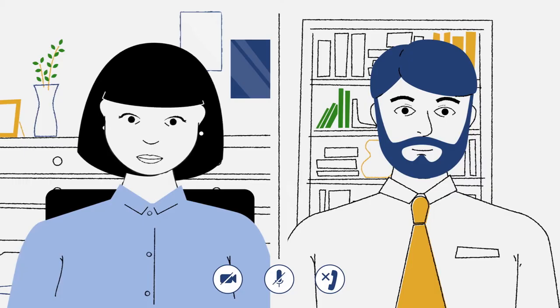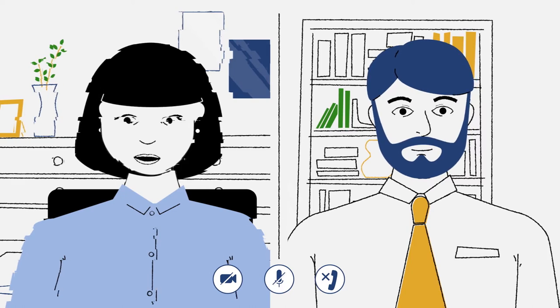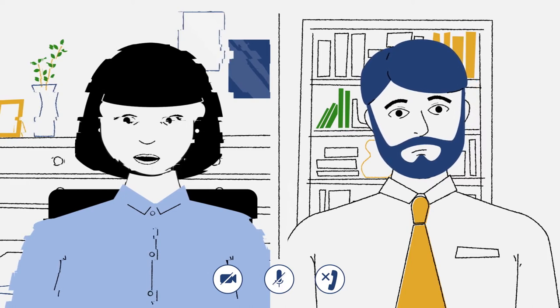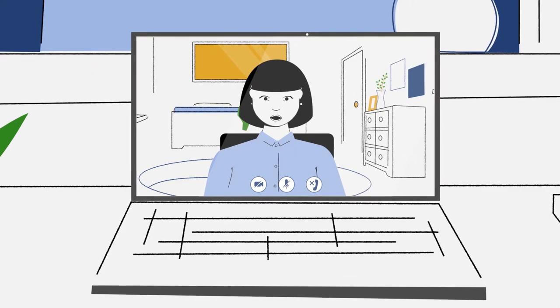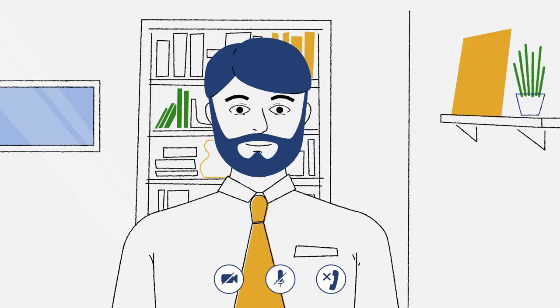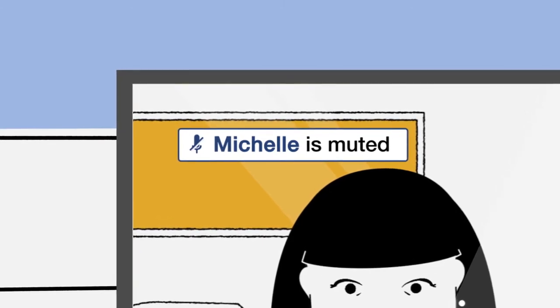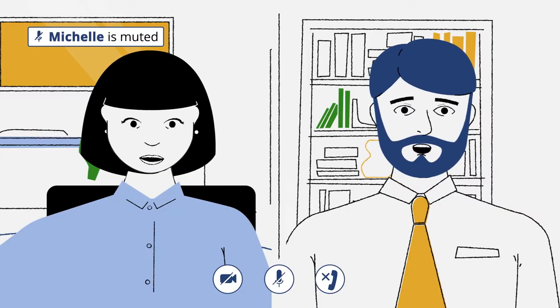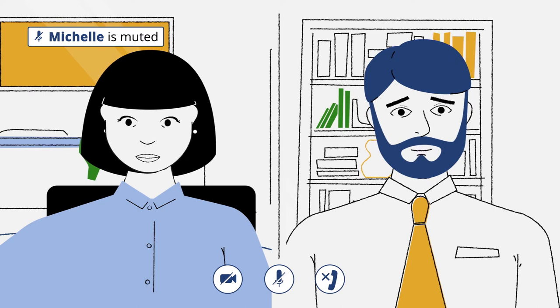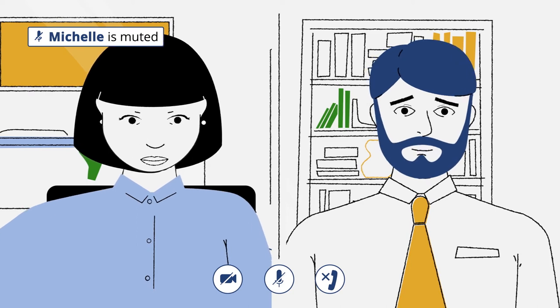A little into the interview, the connection got all glitchy, so I totally missed what she was saying. And then her daughter ran into the room so she muted herself, but then she forgot to unmute. Classic. I had to tell her, which was slightly awkward. But I guess at this point, we're all kind of used to it, right?